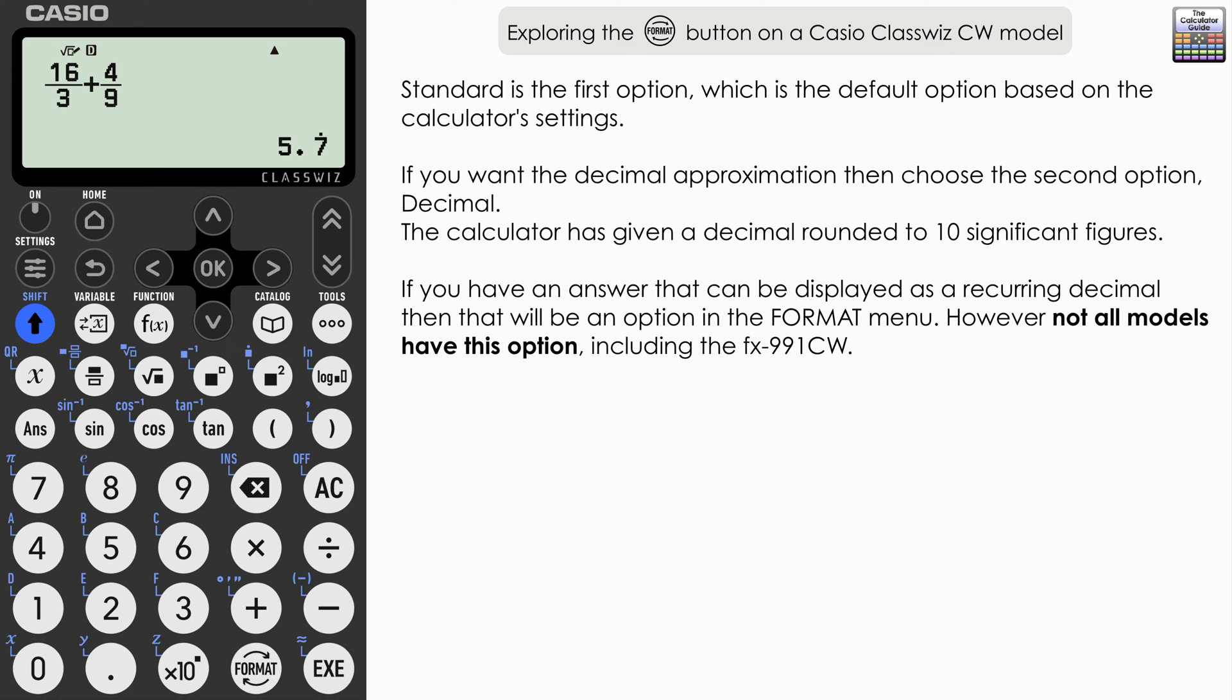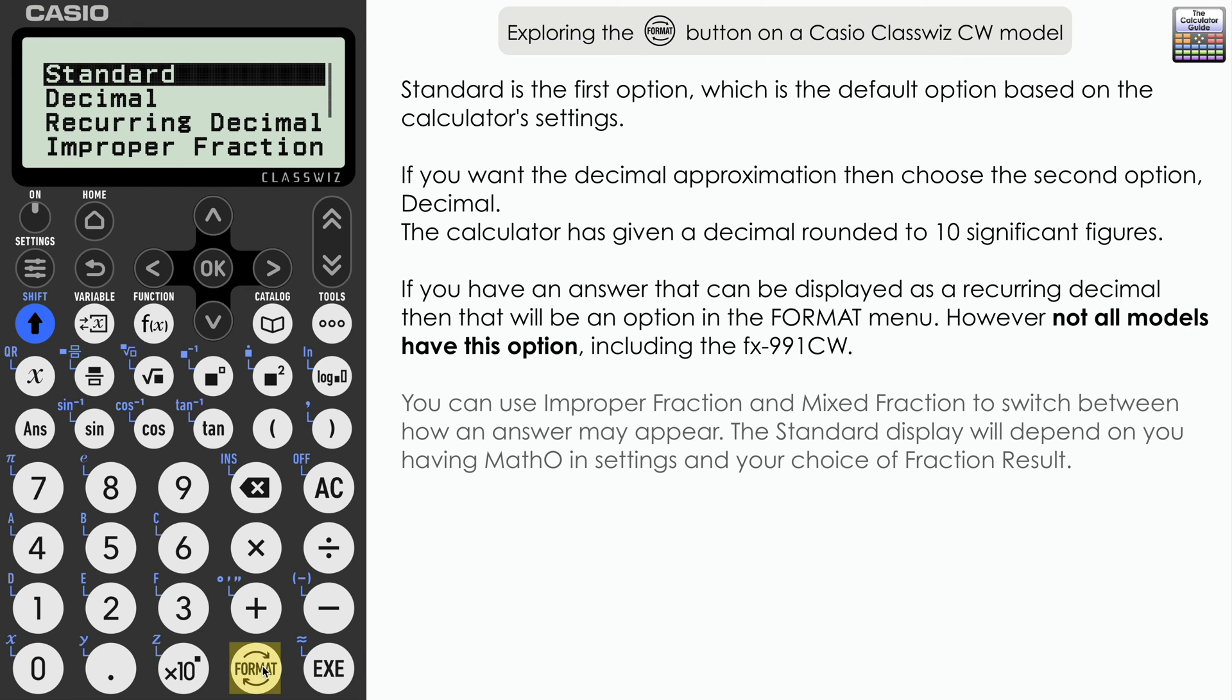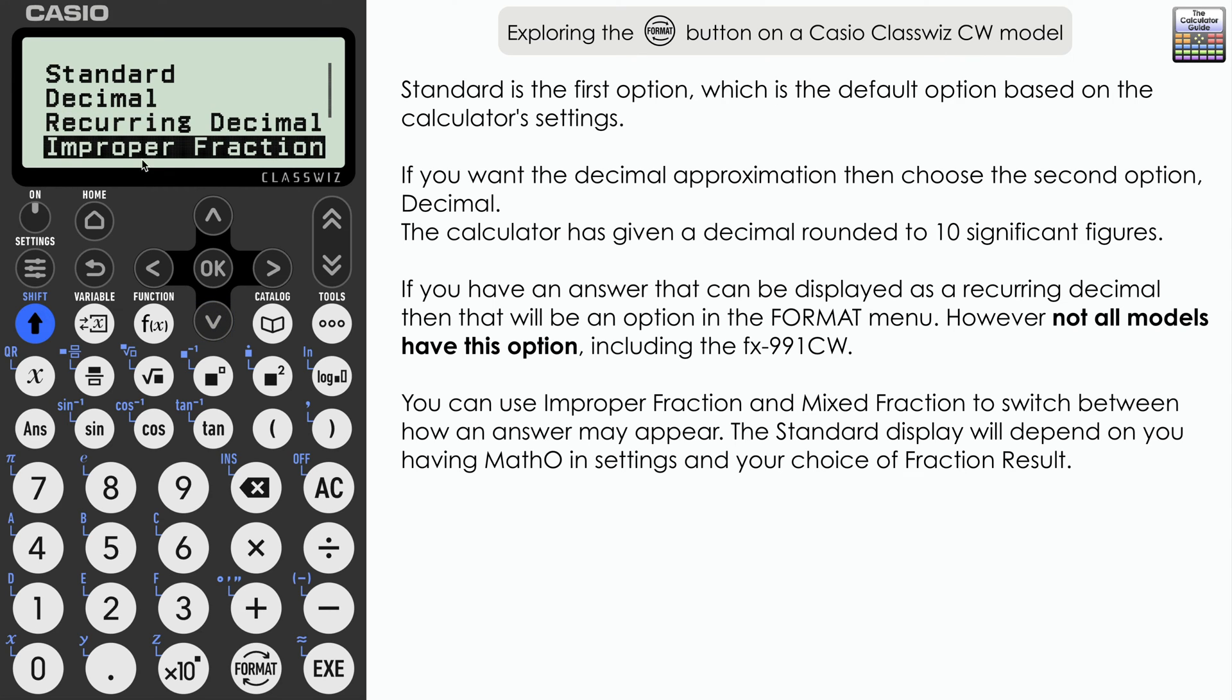Let's return to format again. Now we've got a pair of options that go together here. We've got improper fraction, which we could switch back to at this stage. But remember, that was our standard according to the settings of the calculator. So I'm just going to navigate down and select mixed fraction. That's known as a mixed number here in the UK. So we'll select that.